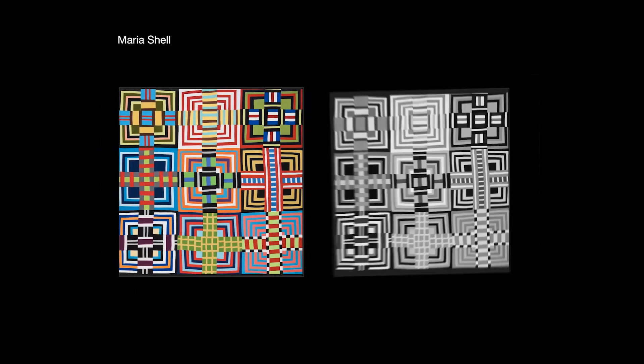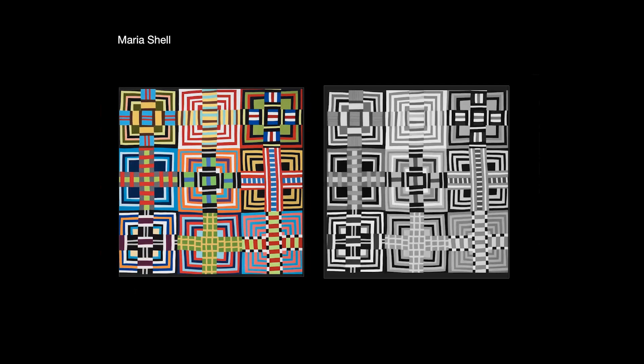An interesting piece from Maria Schell. She's a master of this particular approach to piecing, and I always found this particular quilt interesting because if you look at the colors, you can see how the blue goes black, and how the dark purple tends to go really, really dark gray as well.